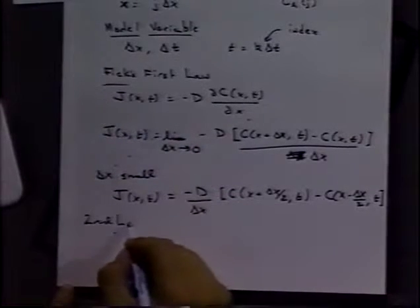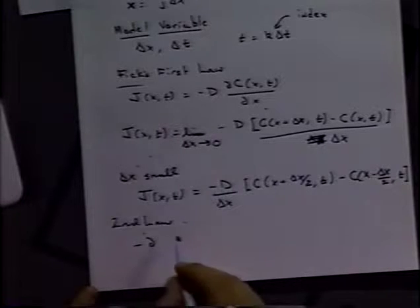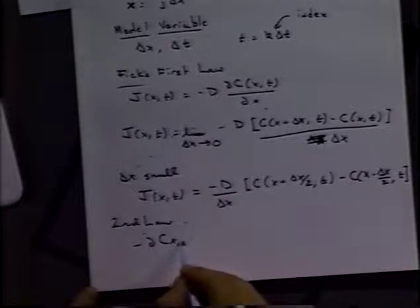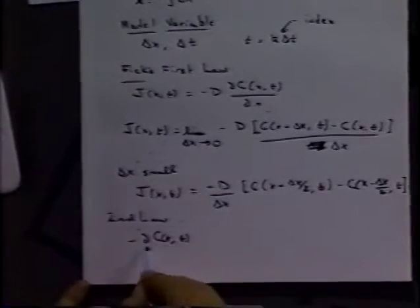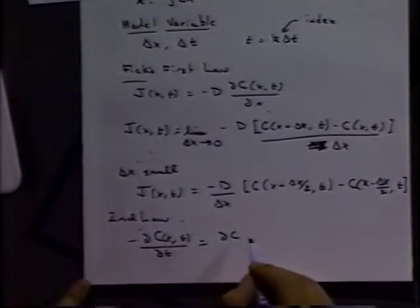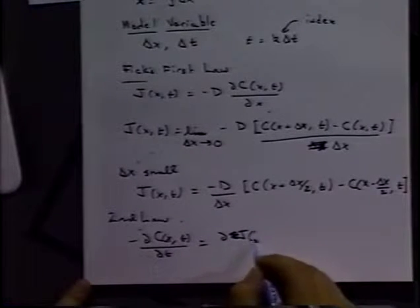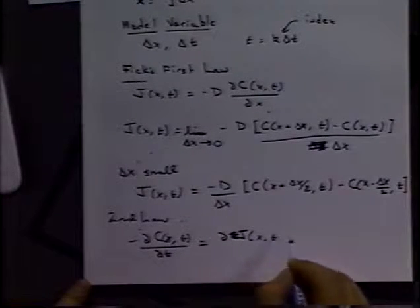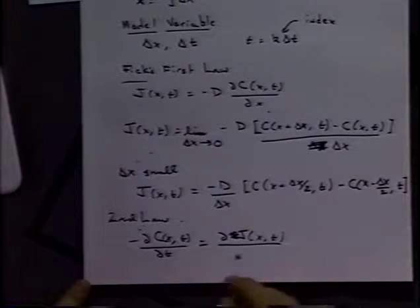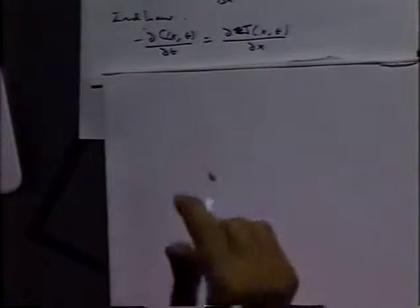Now the second law. Rather than taking the second derivative of the concentration gradient, we can just take the derivative of the flux, which is effectively the same. We'll put in delta x and delta t, just like before, and take the discrete version of that.